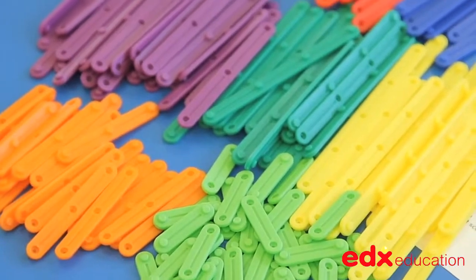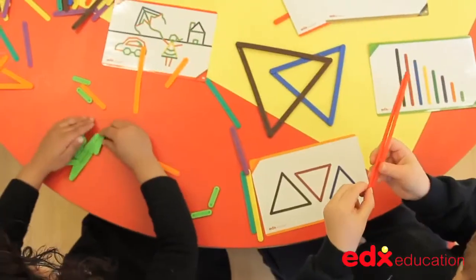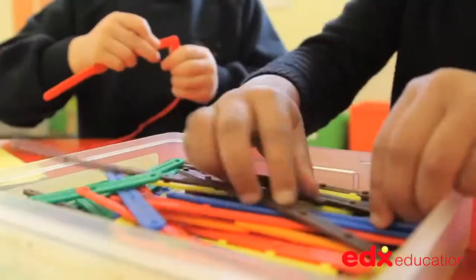Junior Geostix comprises of 140 differently coloured plastic pieces. To use them, the pieces are laid flat on the desktop and are simply pressed together.